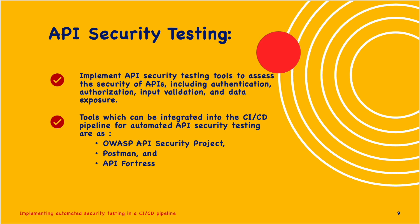Next is API security testing. Implement API security testing tools to assess the security of APIs, including authentication, authorization, input validation and data exposure. Tools that can be integrated into the CI/CD pipeline for automated API security testing are the OWASP API Security Project, Postman, which is widely used, and API Fortress.